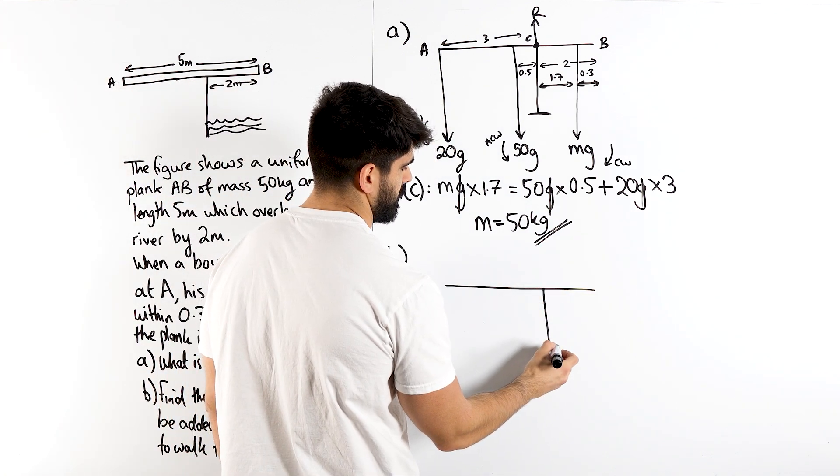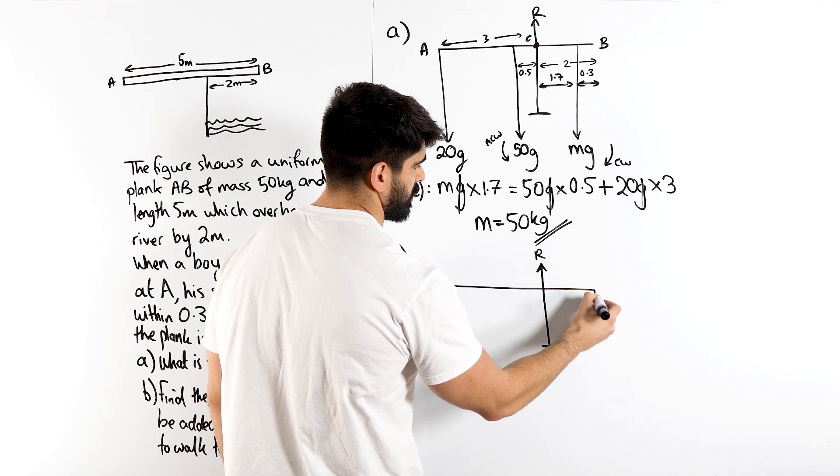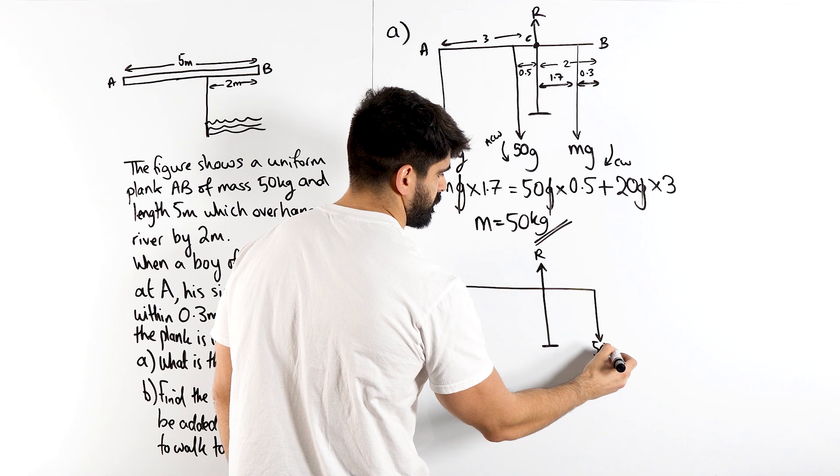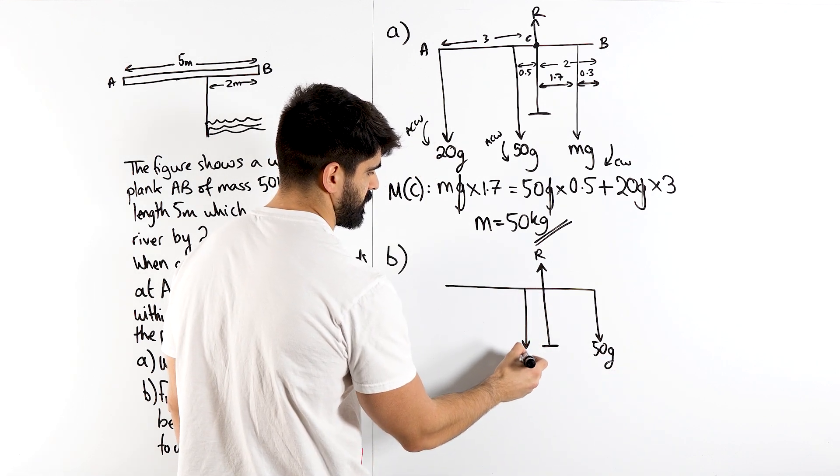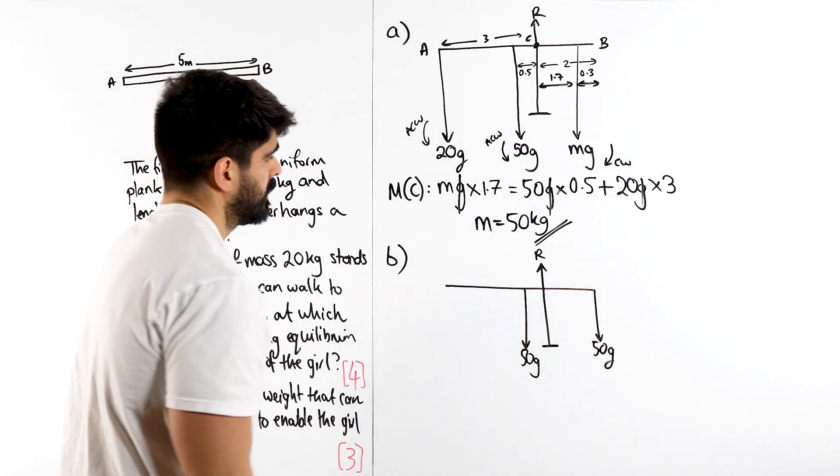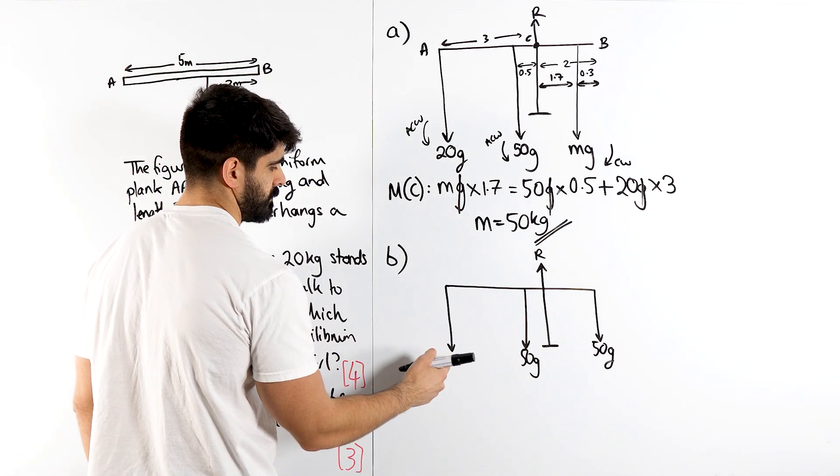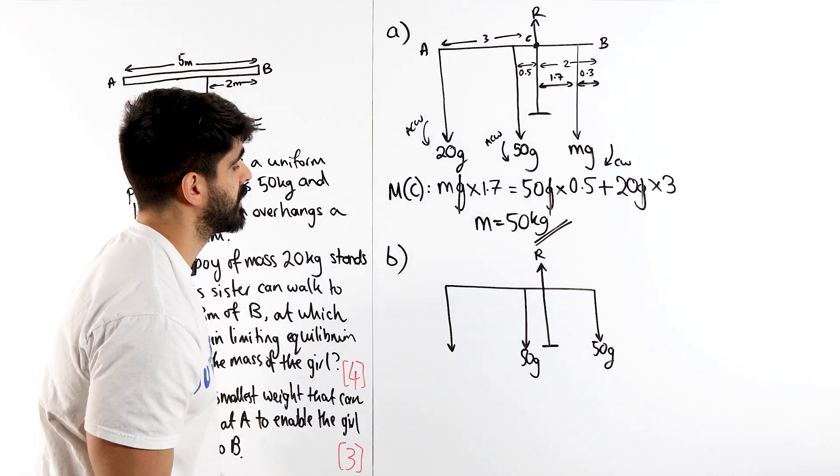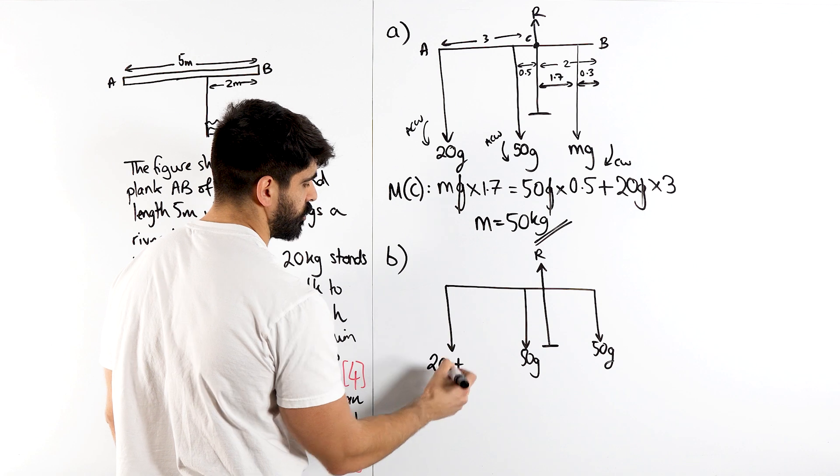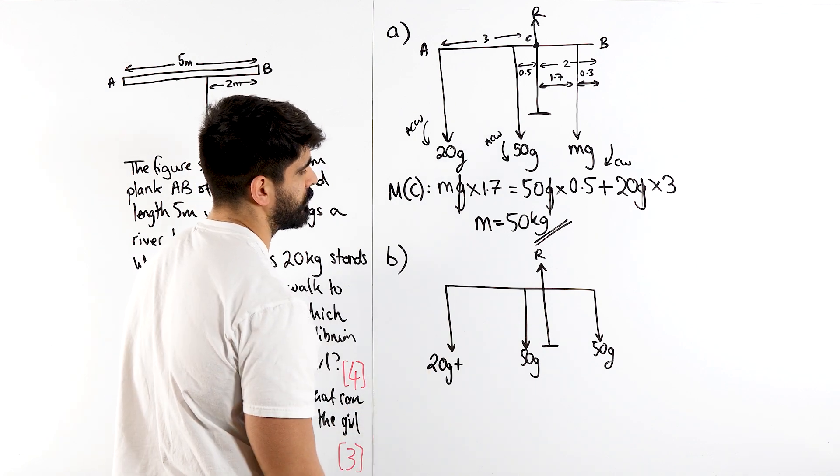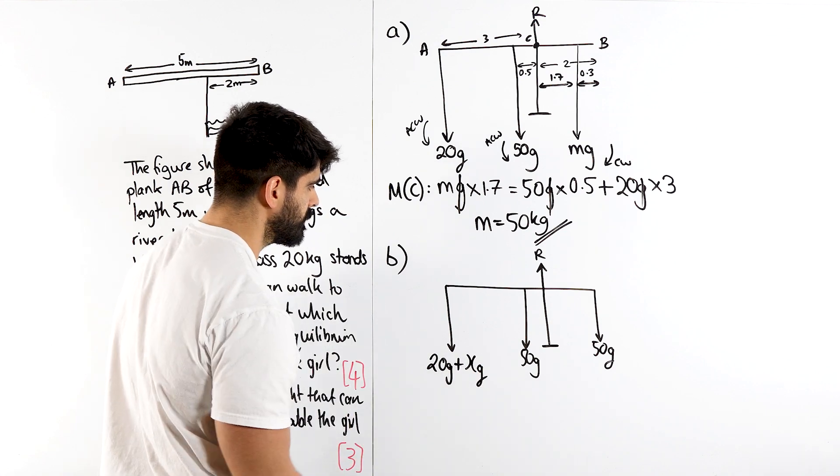So we have our plank, we have this reaction force. Now the girl is over here. We know her mass, it's 50, so we're going to put 50G. We have the center of mass being 50G. And we still have the boy being 20G. But then we also have MG as well. So we're adding on an extra weight. I have used M already, maybe I shouldn't use M again. Let's call it XG.